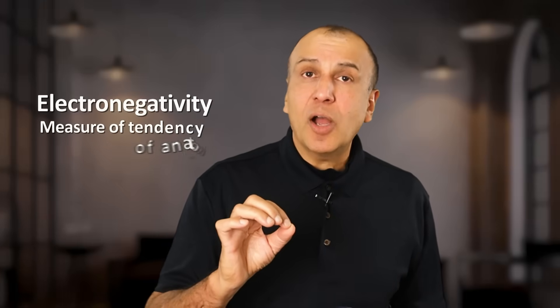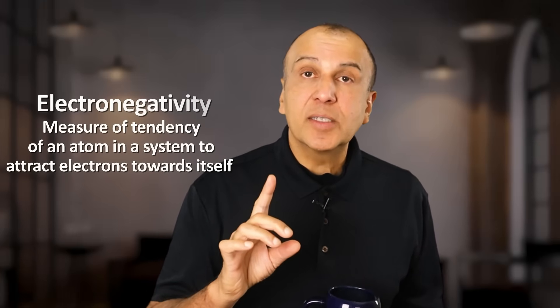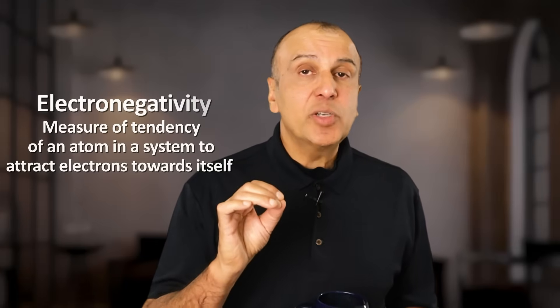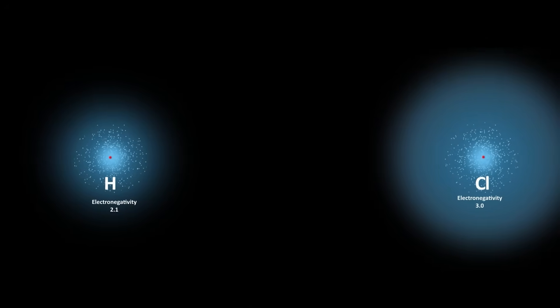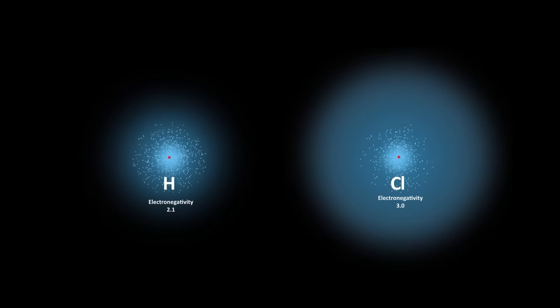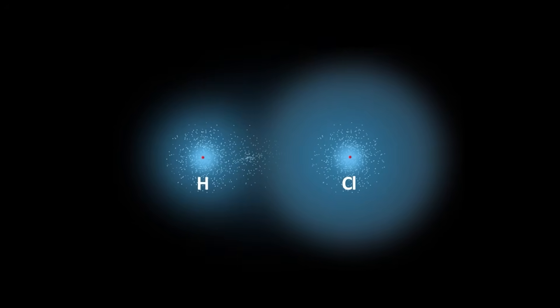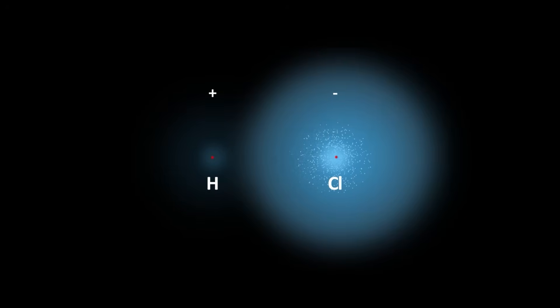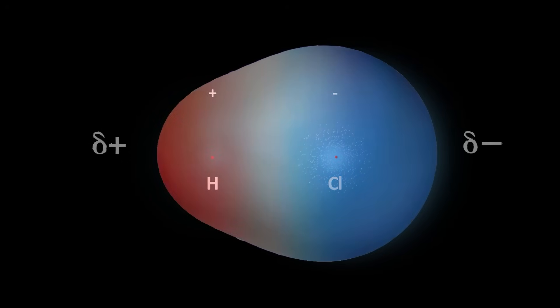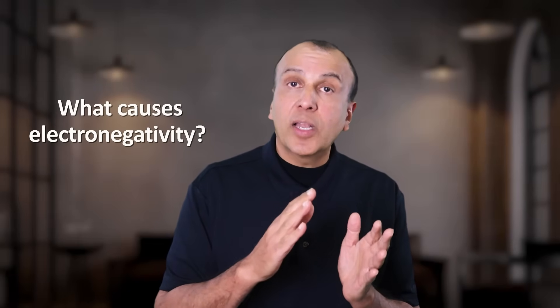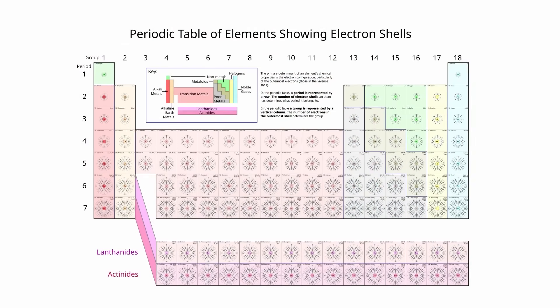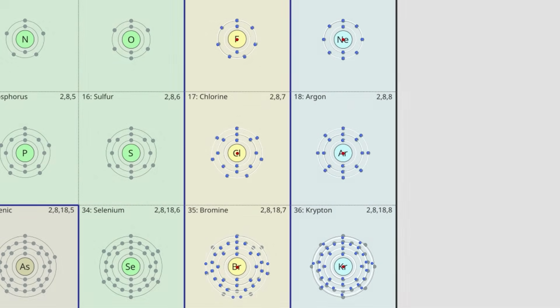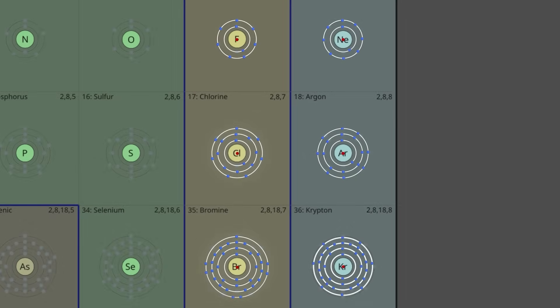Now I want to introduce a concept called electronegativity. This is a measure of the tendency of an atom in a molecule to attract electrons towards itself. When atoms with different electronegativities bond, the shared electrons tend to be more attracted to the more electronegative atom, creating a slightly positive and negative polarity within the molecule. This is determined by the way the shells fill up because of quantum mechanics — the optimal configuration is a full outer shell, as in the noble elements. If the element is immediately before that on the periodic table, like the halogens, it will have the most electronegative configuration.